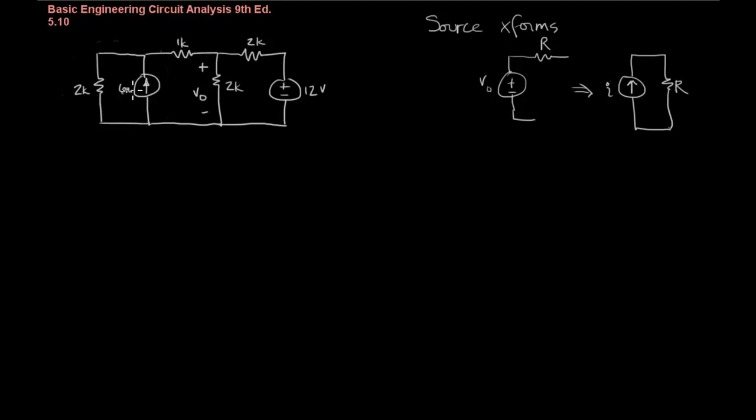So the idea of superposition basically says that we can find the voltage across this resistor by removing all but one source and then calculating the contribution of that source to the voltage. And then systematically going through and performing that same operation, looking at a single source's contribution to the voltage at a specific point in the circuit. In this case, a voltage. We could also do this with currents.